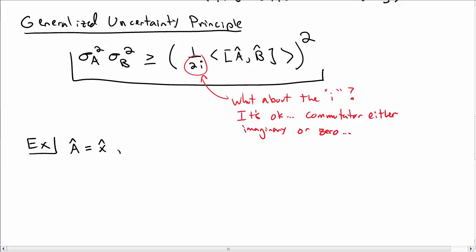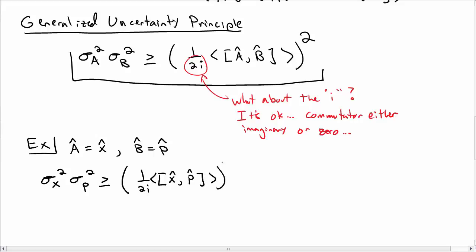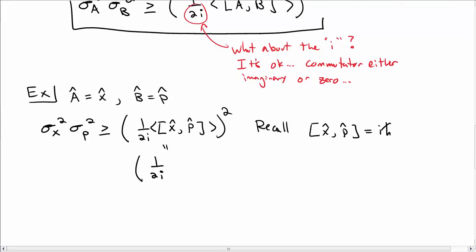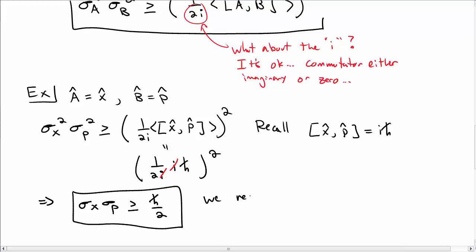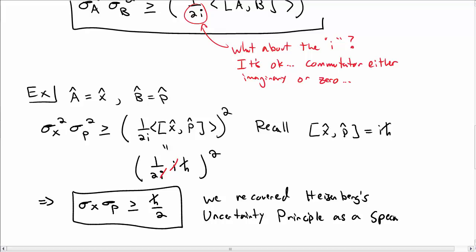As an example, let A-hat be the position operator and B-hat be the momentum operator. The uncertainty principle then reads: sigma-X squared times sigma-P squared is greater than or equal to 1 over 2i times the expectation value of [X-hat, P-hat], all squared. We know the commutator [X-hat, P-hat] equals i-h-bar. Substituting, the right-hand side becomes 1 over 2i times i-h-bar, all squared — the i's cancel. Taking a square root gives sigma-X times sigma-P is greater than or equal to h-bar over 2. We recognize this as Heisenberg's uncertainty principle, recovered as a special case of the generalized uncertainty principle.